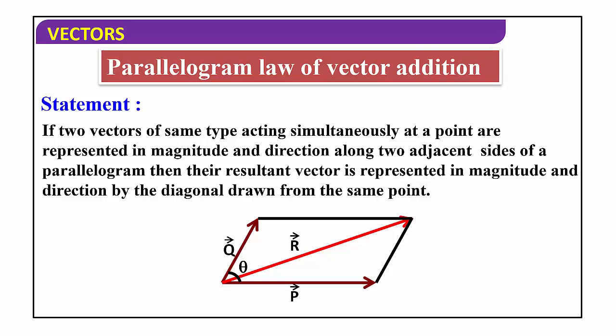Observe the diagram — there are two vectors, vector P and vector Q, acting simultaneously at the same point. Vector P and vector Q are taken along the two adjacent sides of a parallelogram. Their resultant vector is represented by the diagonal — the red colored line. The red line gives the diagonal which is the resultant vector. Vector P, vector Q, and vector R all start from the same point, with P and Q as adjacent sides and R along the diagonal of the parallelogram.